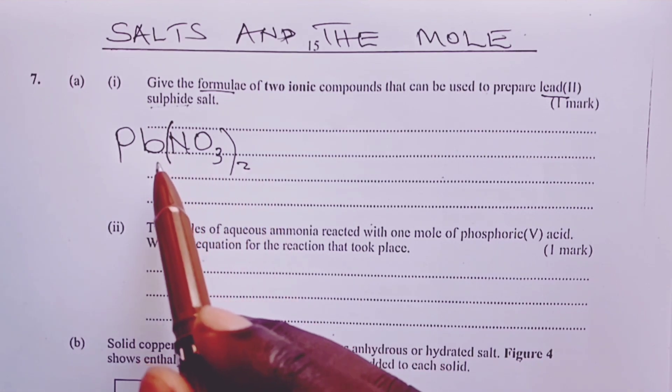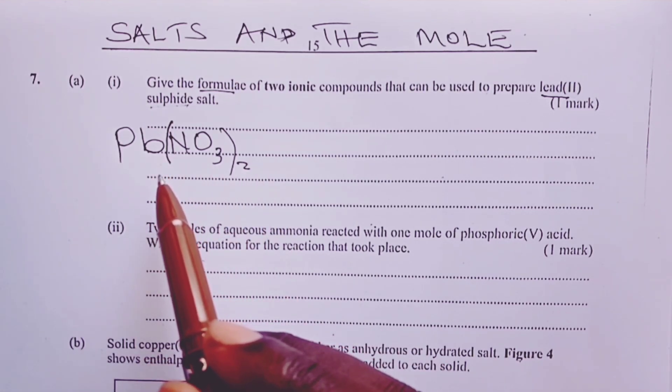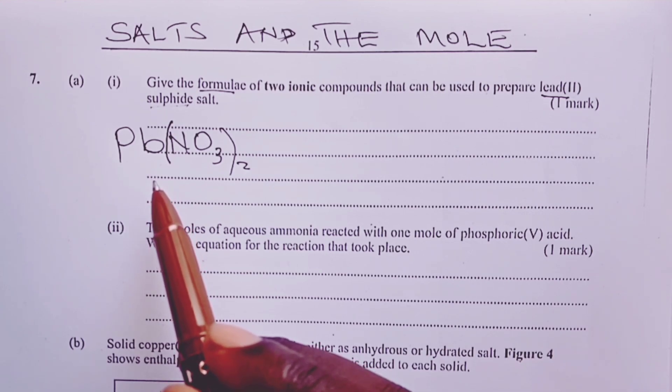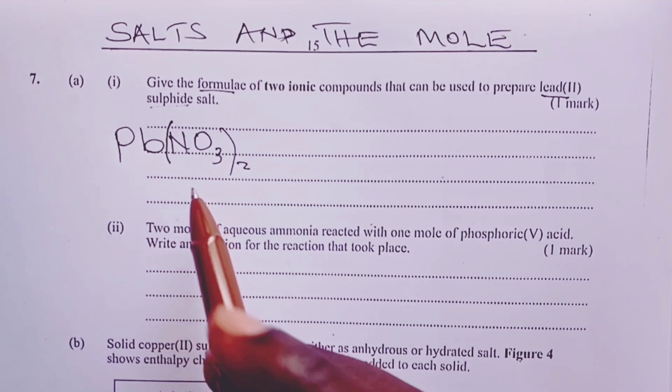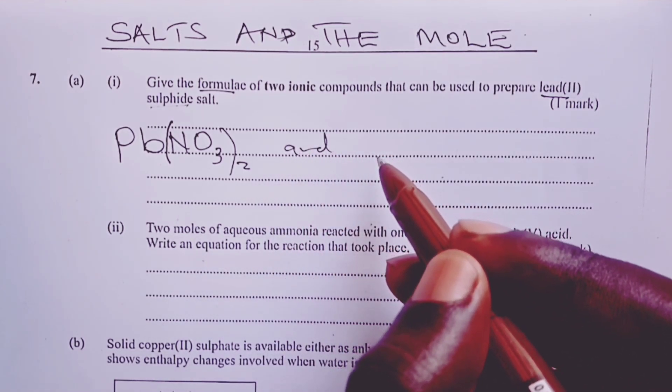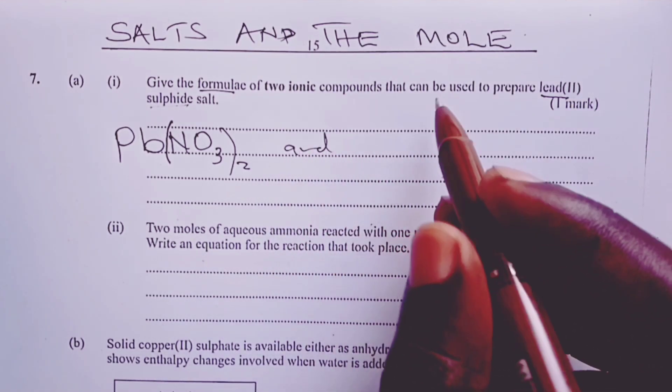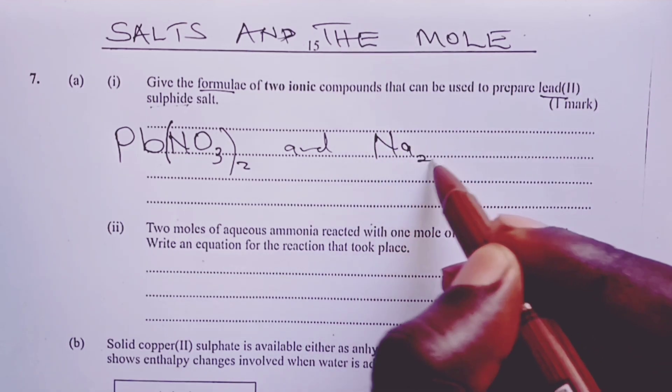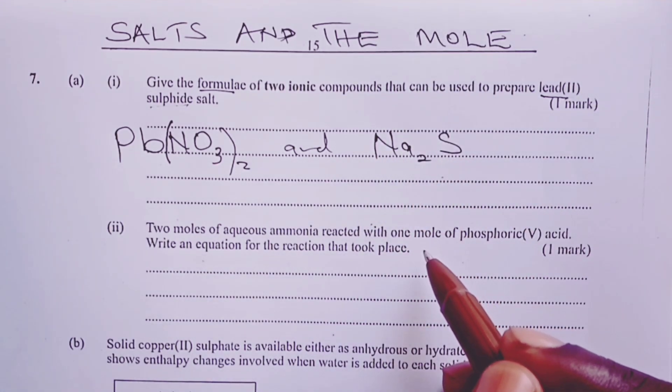So one of the soluble salts of lead that contains lead ion is lead nitrate, Pb(NO3)2.